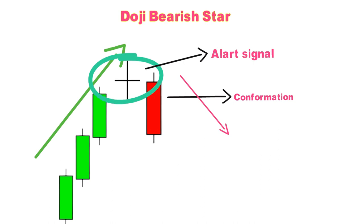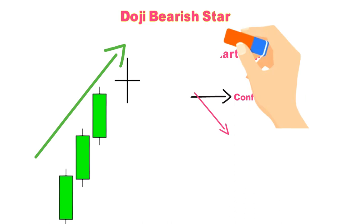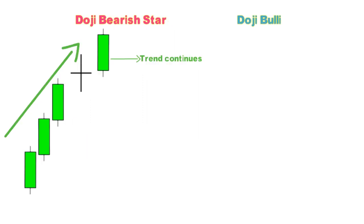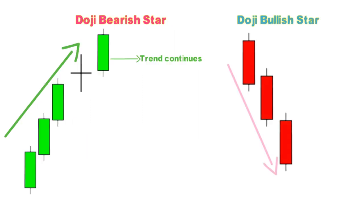Important thumb rule: doji is the first alert, meaning bulls are losing control; the second alert is when bears come into action in an uptrend. If, after doji in an uptrend, a bullish candle forms, then it indicates the trend will continue. When doji forms in a downtrend, we call it a doji bullish alert.